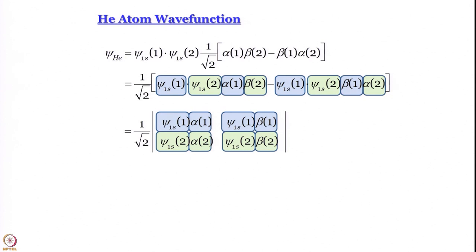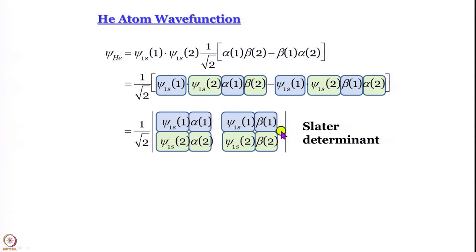This determinant is called a Slater determinant. Let us have a closer look at the determinant — examining what remains the same and what changes as you move along a row. We will break here and continue in the next module.